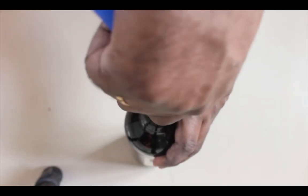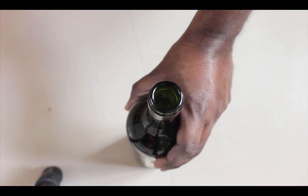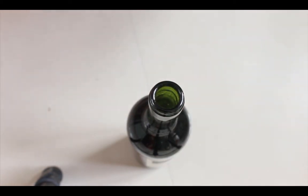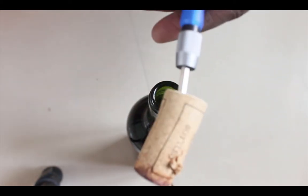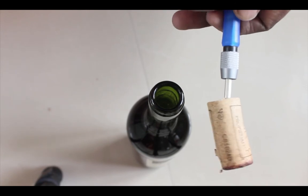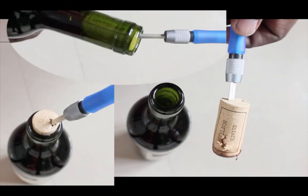We can remove it like this. So this way we can easily open a wine bottle without a corkscrew. We can use a screwdriver, or we can also use a screw or a key. It is very easy. Please subscribe to my channel if you like this video.